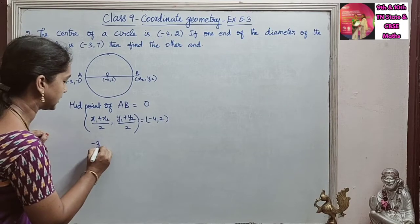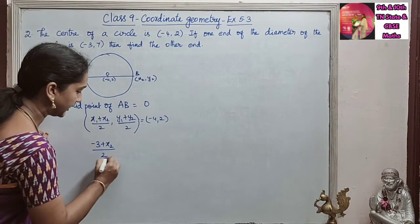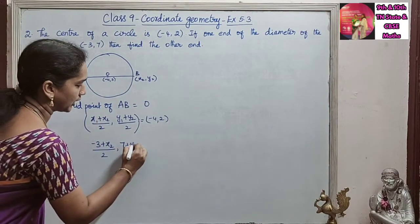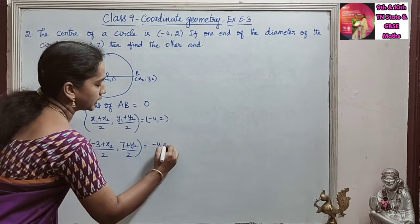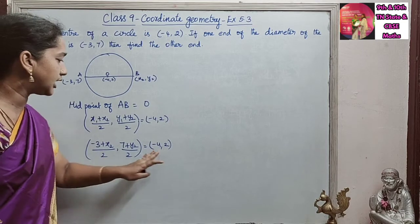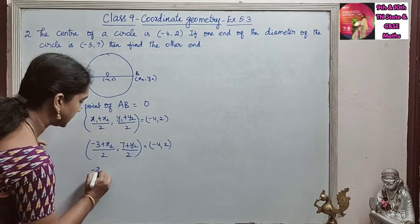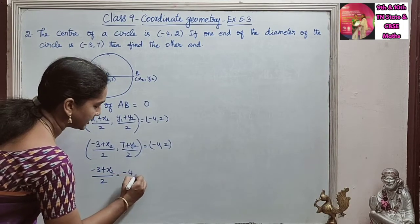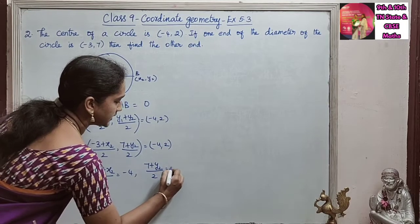So X1 is -3 plus X2, we don't know, that only we are asked to find, by 2, comma, Y1 is 7 plus Y2 by 2 is equal to (-4,2). So now we will be equating X coordinate with -4 and Y with 2. So (-3 + X2)/2 is equal to -4 and (7 + Y2)/2 is equal to 2.